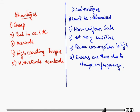There are few advantages with few disadvantages. Advantages: Cheap, used for AC and DC, this is the biggest advantage. It is more accurate, it is having high operating torque, and it withstands overload.